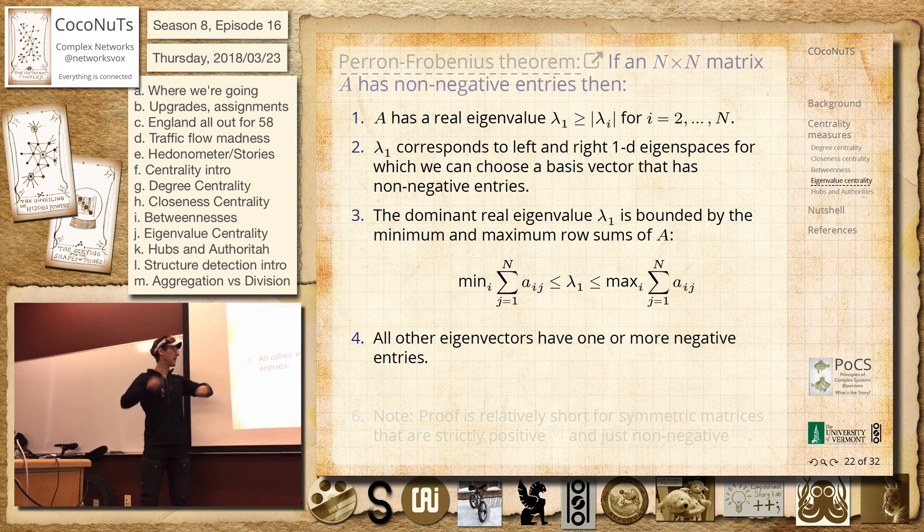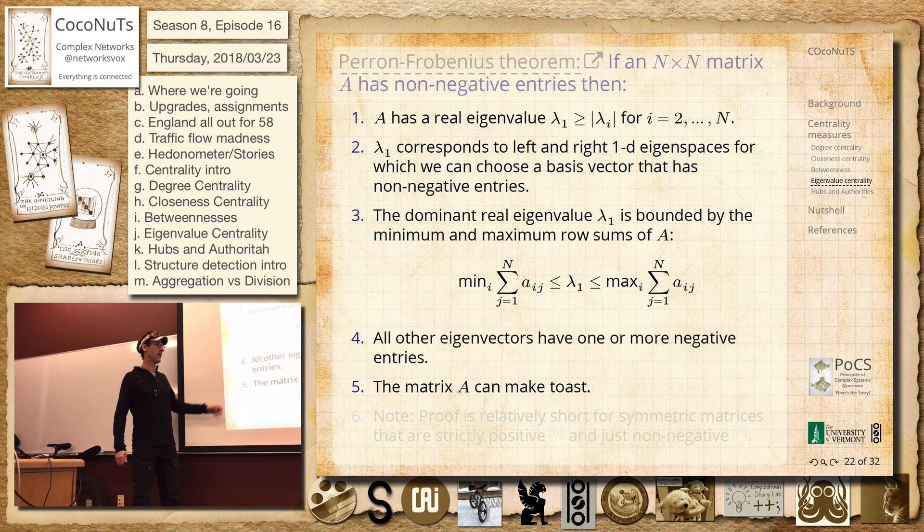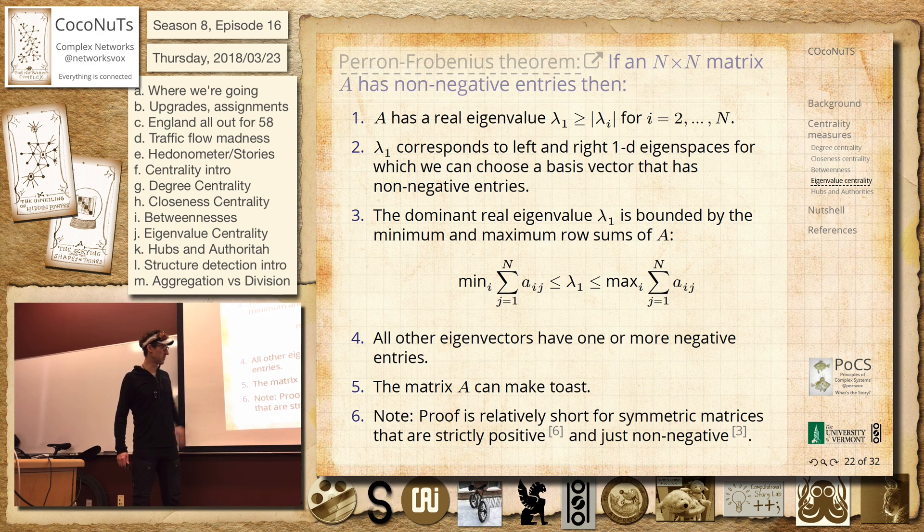And all the other eigenvectors will have one or more. They'll have some signs flipped. So you can kind of see the others as being maybe not kind of the sort of character that we'd like. Yes, lots of things. So it's a pretty good matrix.